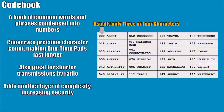A codebook is very handy to have with this process — it saves time and conserves your one-time pad resources. A codebook is nothing more than a book of common words and phrases condensed into numbers. This conserves the one-time pad, making it last longer. If you're using a radio to transmit messages, it's a lot quicker to transmit three characters instead of spelling out the entire word. And if someone is able to decrypt your one-time pad message, they still need the codebook to understand what you're talking about.